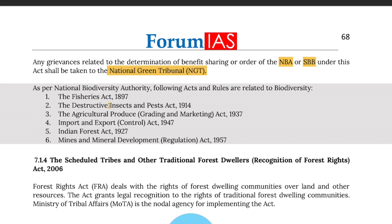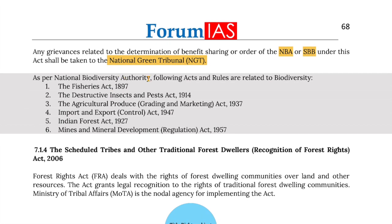As per the National Biodiversity Authority, the following acts and rules are related to biodiversity: the Fisheries Act of 1897, Destructive Insects and Pests Act of 1914, the Agriculture Produce Grading and Marketing Act of 1937, Import and Export Control Act of 1947, Indian Forest Act of 1927, and the Mines and Mineral Development Regulation Act of 1957.